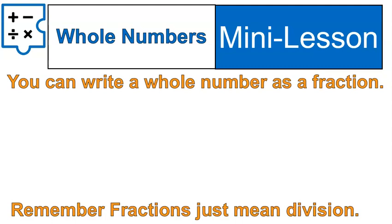Let's talk about whole numbers. You can always write a whole number as a fraction. Remember, fractions just mean division, so every time you're given a whole number, like 5, for example, you can write it as 5 divided by 1. 5 divided by 1 is equal to 5. So 5 written as a fraction is 5 over 1.